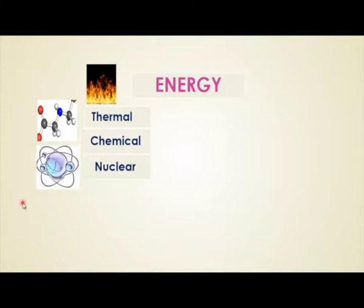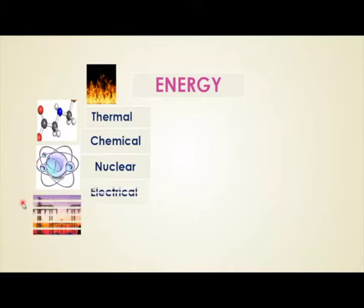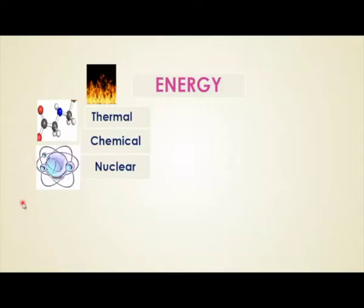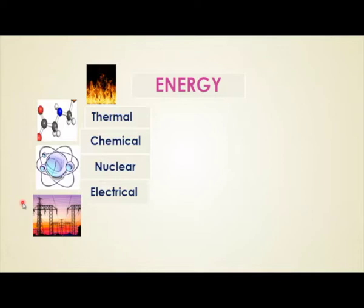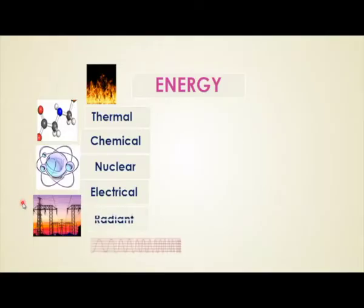Next one is nuclear energy. Atoms tend to fuse or undergo fission — that is, they can combine together or one atom can be split into different atoms. During these processes, it produces energy called nuclear energy. Next, electrical energy is the basis for all electrical appliances. Movement of electron charge along a material forms electrical energy. Next, electromagnetic radio waves carry energy called radiant energy. It is available in free space at different frequencies.